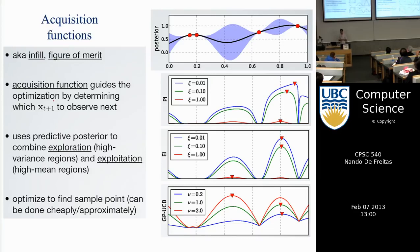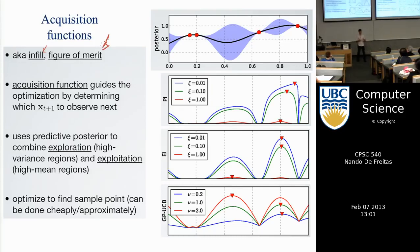The acquisition function is also known as the infill function, or in statistics and experimental design as the figure of merit. When you design an experiment, you design it to get data — an experiment is an action that returns data. This whole framework encapsulates the problem of designing experiments. The acquisition function tells you which point to sample next, or which experiment to run, or which question to ask.